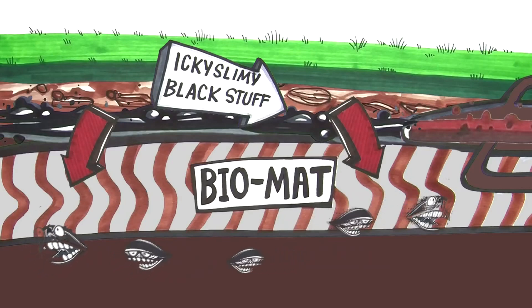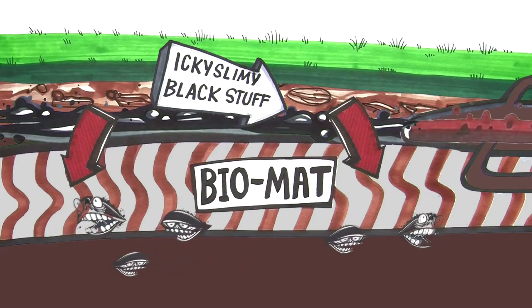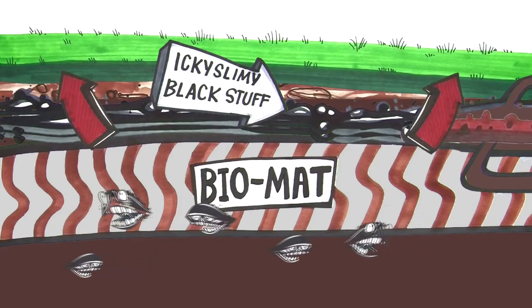Wastewater can still flow through this biomat initially, but over time, the accumulation of this substance becomes too much, leading to a clog and, inevitably, system failure.